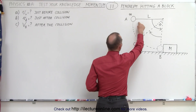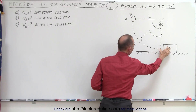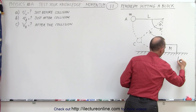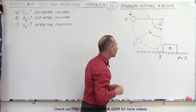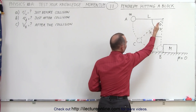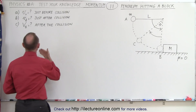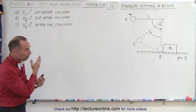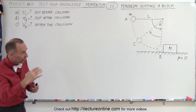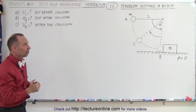The pendulum starts at a certain height. It has a length L, a mass M, and it swings down and hits a block at the bottom with mass big M. The coefficient of friction between the block and the surface equals zero. The ball bounces back to a certain height, making a certain angle with the vertical. The questions are: what is the velocity of the ball just before it hits the block, just after it hits the block, and what is the velocity of the block after the collision?